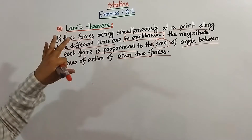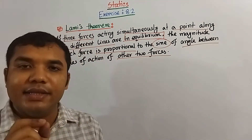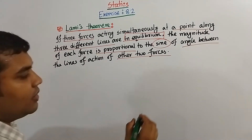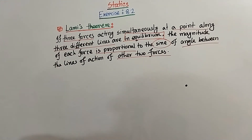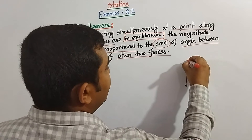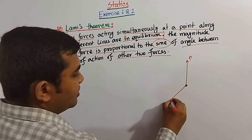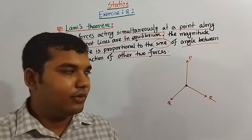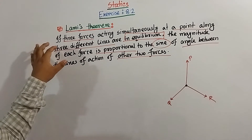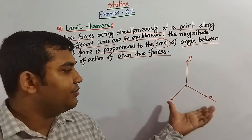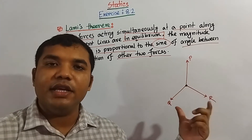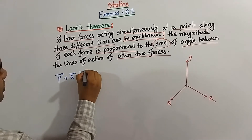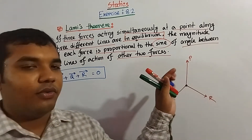Here, the statement of Lamy's theorem says three forces must be acting at the same point. Our triangle's law of equilibrium was the same — forces also working at the same point. So here, three forces have been acting simultaneously at the point. This is force P, that's force Q, and here the force R. Three forces are acting at the same point. If this, then this will be in equilibrium — that means P plus Q plus R equals 0. This is actually given because these three forces are in equilibrium.